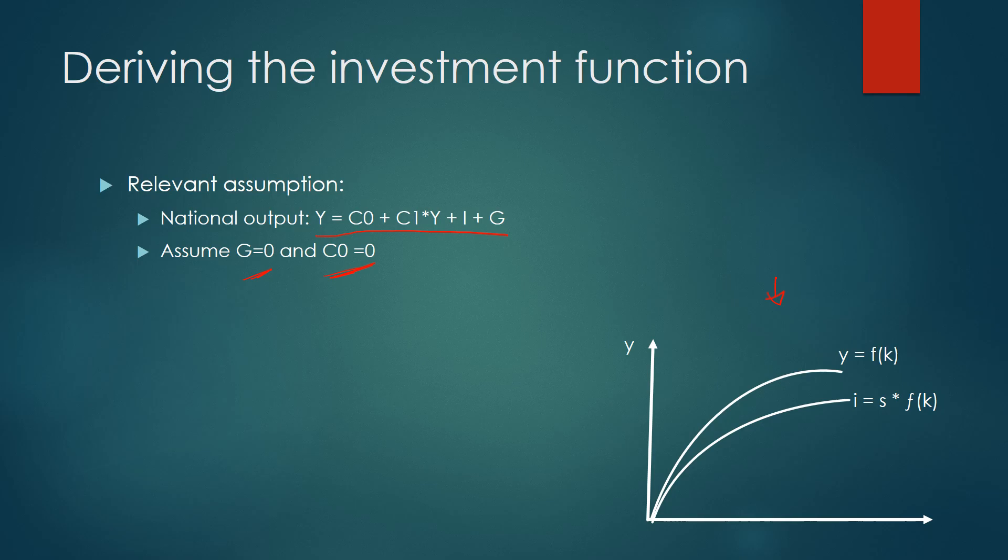So let's just write out our equation now. So since we assume that C0 is equal to zero, we can get rid of this. And since we assume G is zero, we can also get rid of that. So then we can write this as Y is equal to C1 multiplied by Y plus investment.